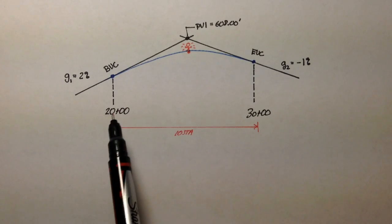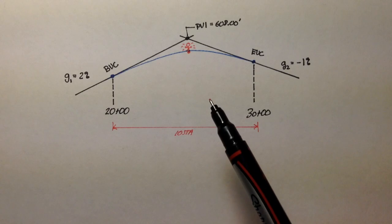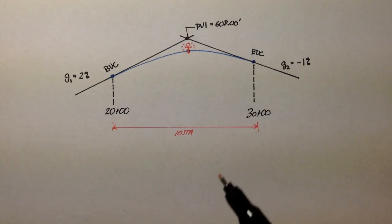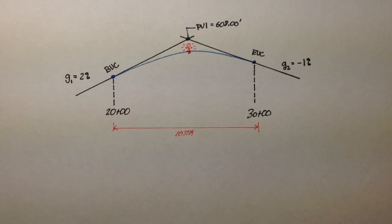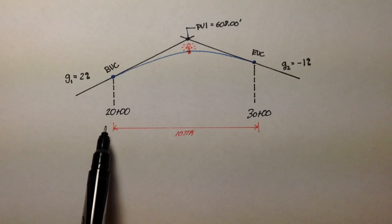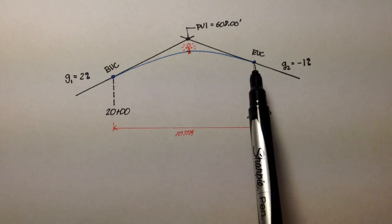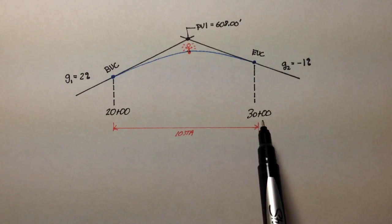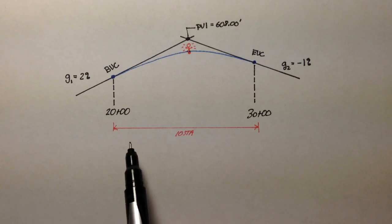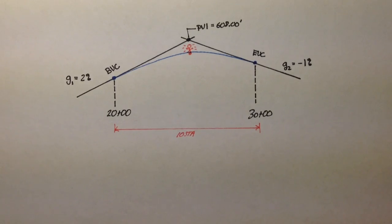In this case, this is a crest curve, so we have a high point. If we had a sag curve, we'd have a low point. The first question was to find the elevation of BVC, beginning of vertical curvature, located at station 20. The end of vertical curvature is located at station 30. That means the length of this vertical curve is 10 stations long.